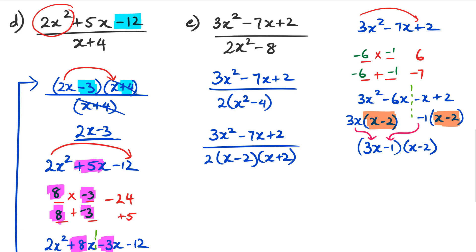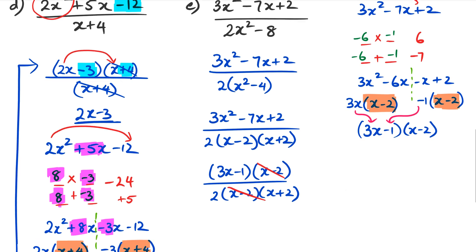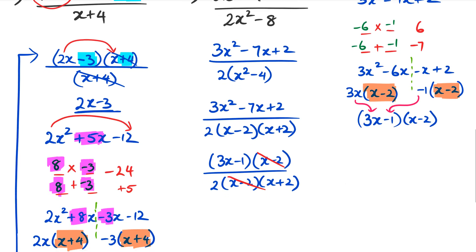So that now the numerator, I can replace it with 3X minus 1, because I've just factorized it on the right-hand side there, and X minus 2. And as for the denominator, I can write it 2X minus 2 and X plus 2. So now I look at my common factors, X minus 2 and X minus 2 disappear. And that's basically it, because I don't really have anything else that I can do. So this ends up being 3X minus 1 divided by 2 times X plus 2. And we leave it at that.